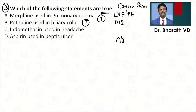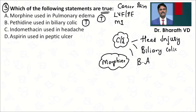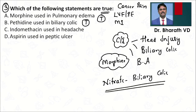Please remember the contraindications of morphine — frequently tested. Morphine is contraindicated in head injury, biliary colic (it worsens it), and bronchial asthma. Can we use nitrates in biliary colic? Please answer in the comment section. Nitrates are not used in biliary colic.